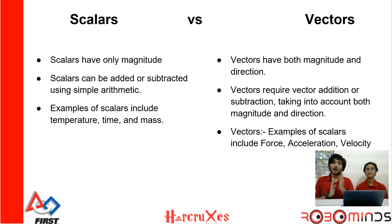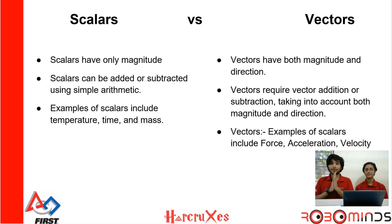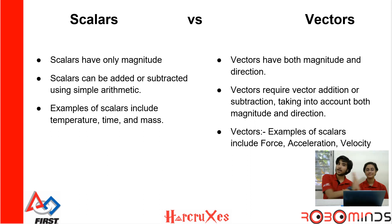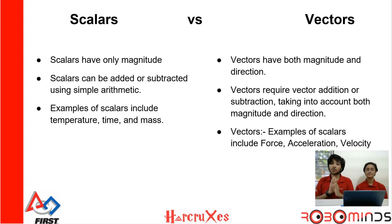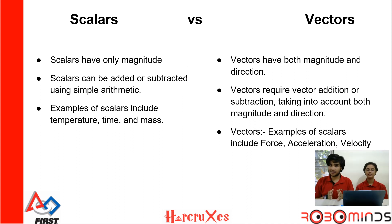Vectors, however, are harder. Vectors are quantities such as force, acceleration, and velocity. Here, it matters in which direction you are moving. For example, if I move my hand in this direction and then in that direction, the total movement is a combination of both. Therefore direction matters, and you can't directly add up magnitudes. We will learn how to add vectors in this video.